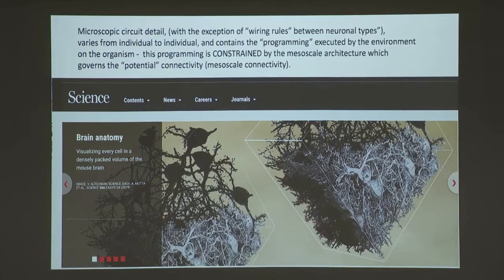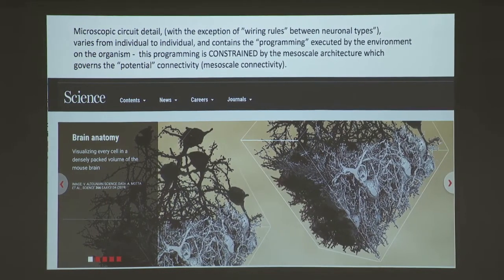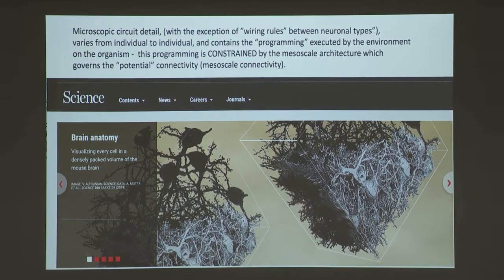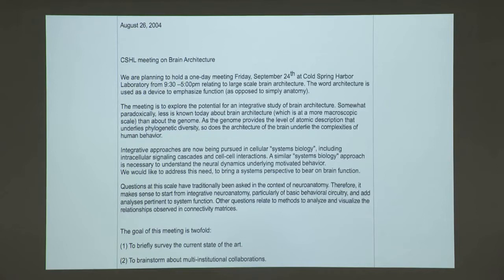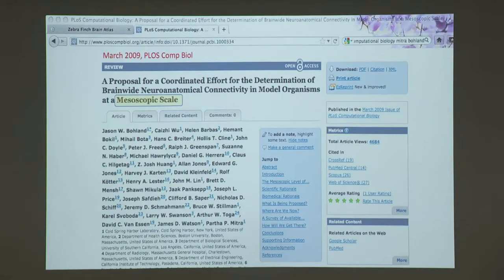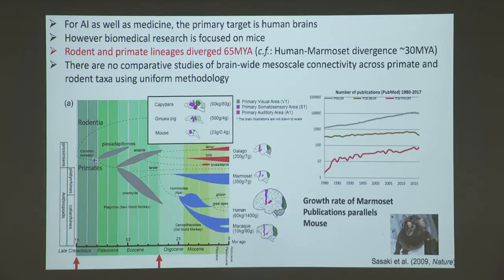You have your lifetime programming — interacting with your environment and adapting — and that is constrained by the mesoscale architecture programmed over evolutionary timescale, which governs the potential connectivity. In 2004, I organized a workshop at Cold Spring Harbor saying we need to bring back neuroanatomy, which had been a dying or dead subject for several decades. It's now come back very vigorously, culminating in a proposal to map at the mesoscopic scale the brain-wide neuronal connectivity in multiple organisms.